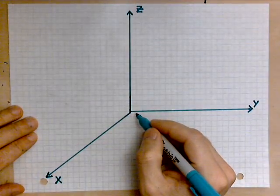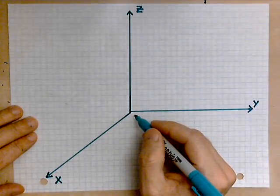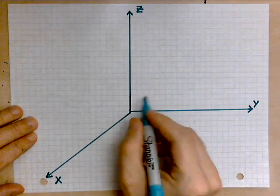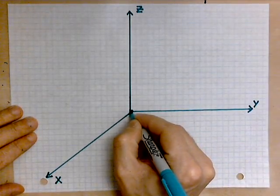The point in the middle, as always, is still known as the origin. Because it's where the three lines meet.